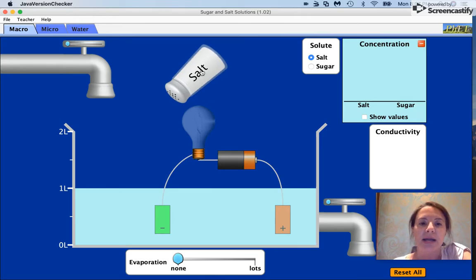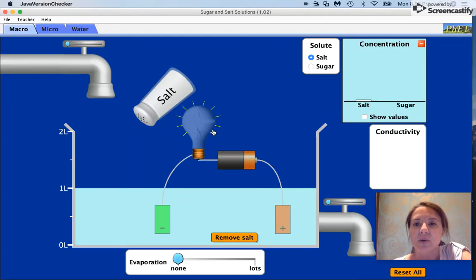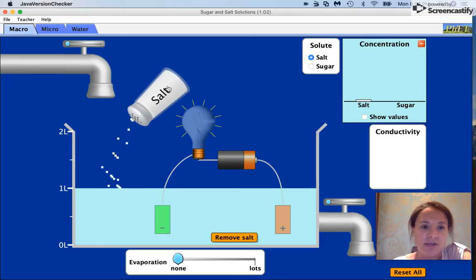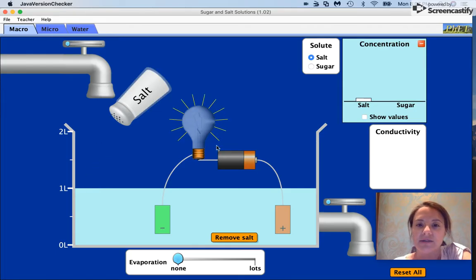So let's see what happens when we add a little bit of salt. We notice that the light bulb is starting to glow a little bit brighter. Let's see what happens if we add a little bit more salt. It appears as if it's becoming more conductive. So that is very interesting.